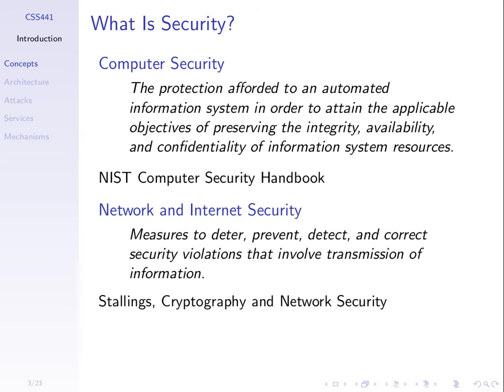This is from a security handbook from a standards organization in the US. Computer security may focus on an individual computer, but commonly we network computers, so we also care about security when information is transferred between computers. Network and internet security involves measures to deter, prevent, detect, and correct security violations — when something goes wrong involving the transmission of information, not just preventing someone from accessing my laptop, but stopping someone from reading information sent from my laptop to a server.